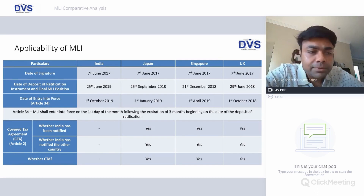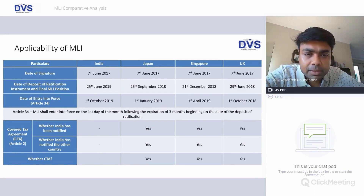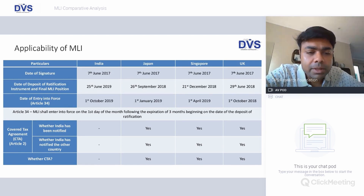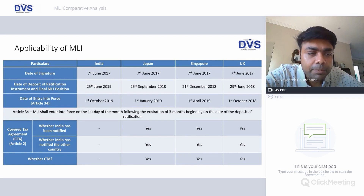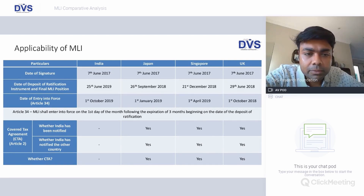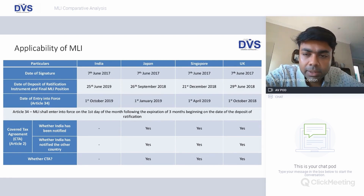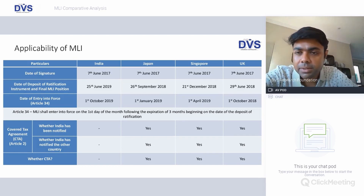As far as applicability of MLI is concerned, all four jurisdictions including India signed these agreements on 7th June 2017. The other three countries ratified in 2018 and deposited their ratified instruments. As far as India is concerned, this happened only by 25th June, and the entry into force for India is effective 1st October 2019. At this point in time, all three agreements we are talking about are covered tax agreements as far as MLI is concerned from an Indian perspective.